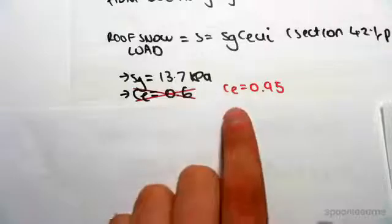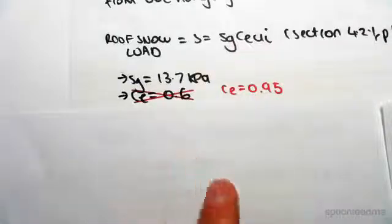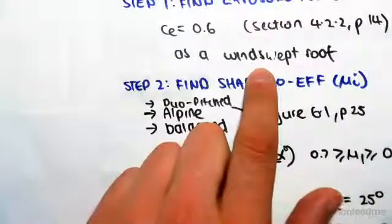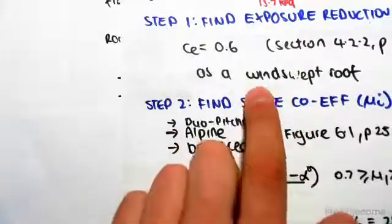So you think that ce is unchanged but it actually is changing. Remember, ce was dependent on the windswept roof, so obviously our roof isn't changing for our problem, so something else is happening to change ce.